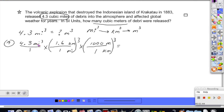4.3 miles cubed times 1.6 kilometers per 1 mile cubed times 1,000 meters over 1 kilometer cubed is going to give you a value of 1.76128 times 10 to the 10th. And your answer would be in meters cubed, noticing that units cancel that are on opposite sides of the fraction.